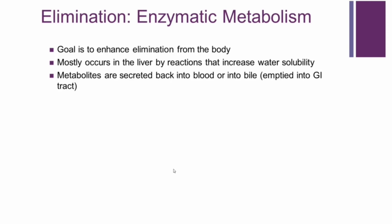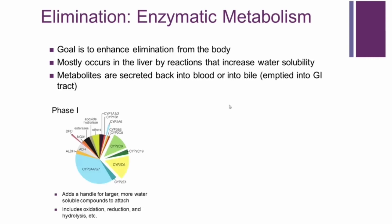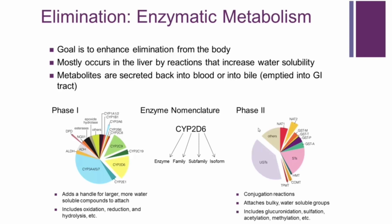Now we'll move to elimination as a pharmacokinetic mechanism. There are three different types. The first is enzymatic metabolism, whose goal is to enhance elimination from the body. This mostly occurs in the liver by reactions that increase water solubility. The metabolites are then secreted back into the blood or into the bowel where they're eliminated. There are different phases: phase one makes the drug more hydrophilic (e.g., CYP450 enzymes), and phase two involves conjugation to also increase water solubility for elimination.